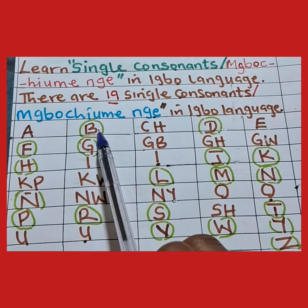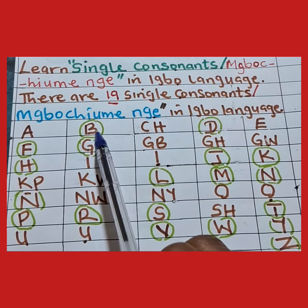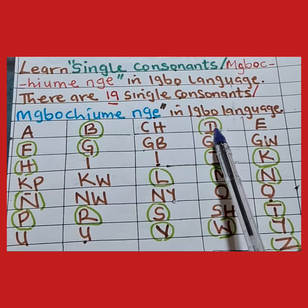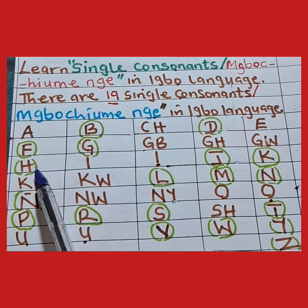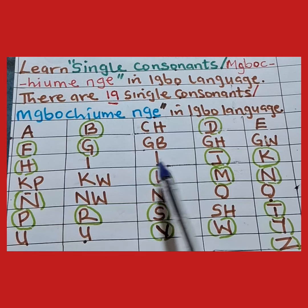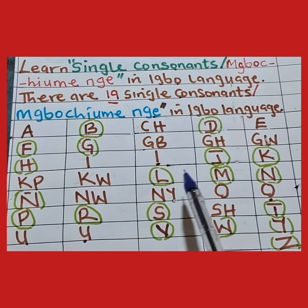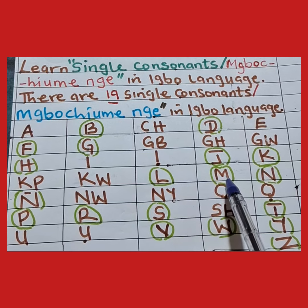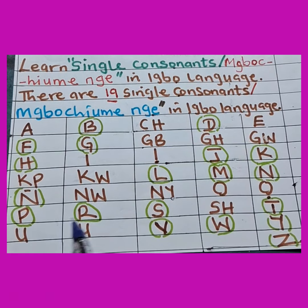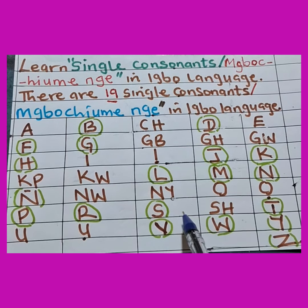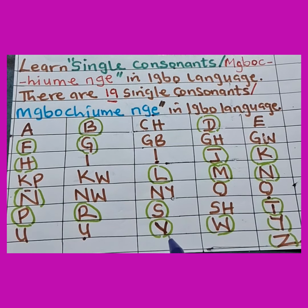The first one is B. B is a consonant — it is single. We call single consonants in Igbo, Mbochumenge. Another one is D. F, G, H, J, K, L, M, N, N, P, R, C, T, V, W, Y.